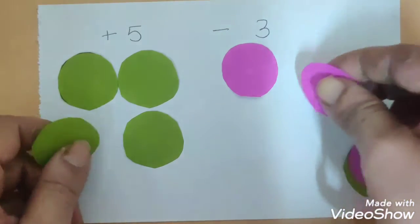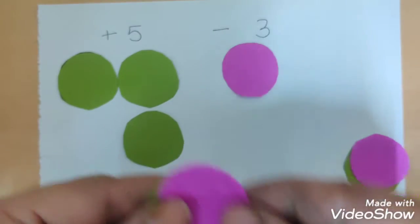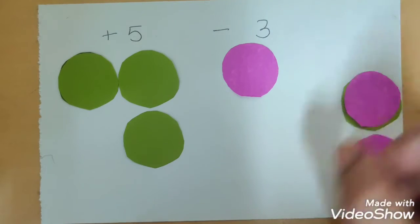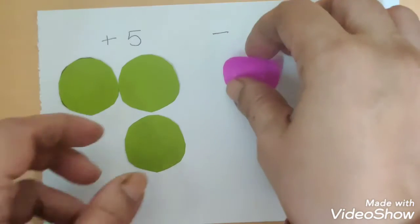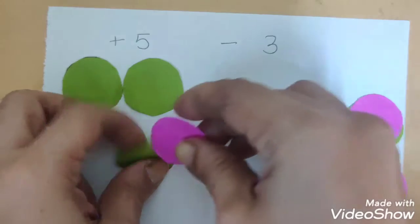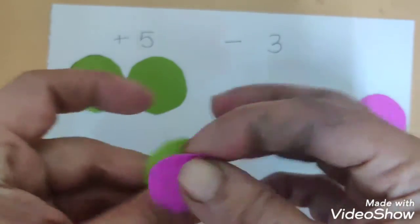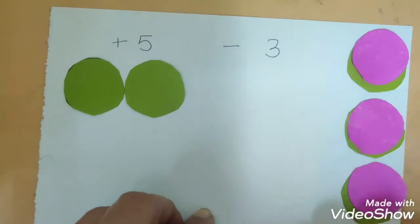Similarly, take 1 of this, 1 of this, they nullify and place it away. And do we still have? Yes, I still have 1 more here. I take 1 of this and 1 of this, they nullify and keep it away.